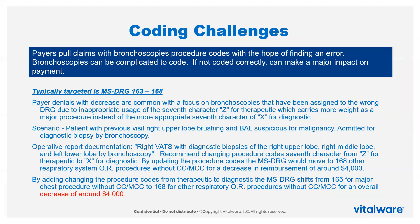Another example shows how selecting the wrong diagnostic versus therapeutic character in a procedure code affects reimbursement—particularly when documentation is ambiguous or productivity pressures exist. In a bronchoscopy case, if the proper therapeutic versus diagnostic character is not selected, it can have a negative $4,000 impact. Payers have historically focused on bronchoscopies, and they remain an area of concern in previous grouper versions.